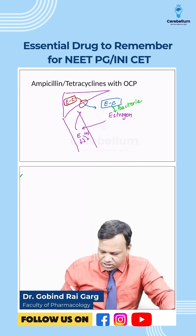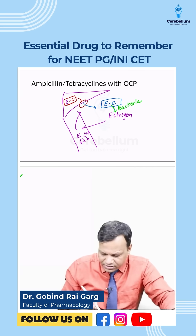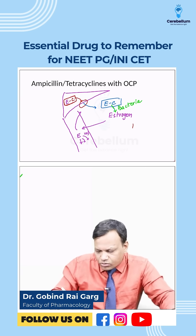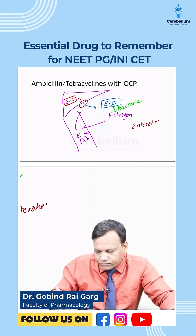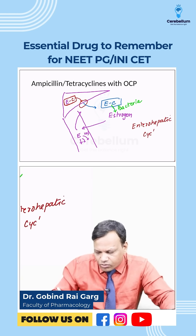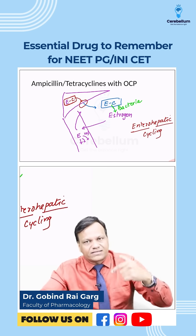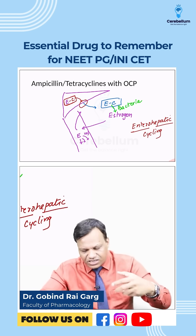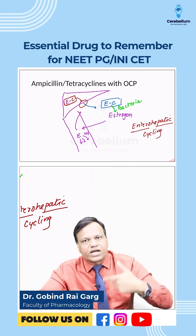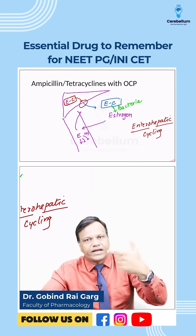This process is known as enterohepatic cycling — 'entero' meaning intestine and 'hepatic' meaning liver. Through enterohepatic cycling, the same estrogen is utilized again and again, maximizing its effect.